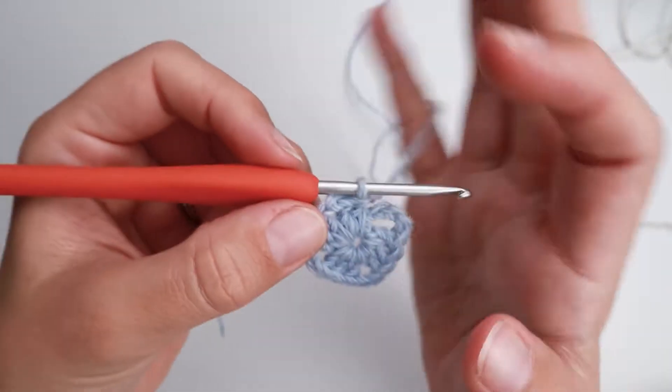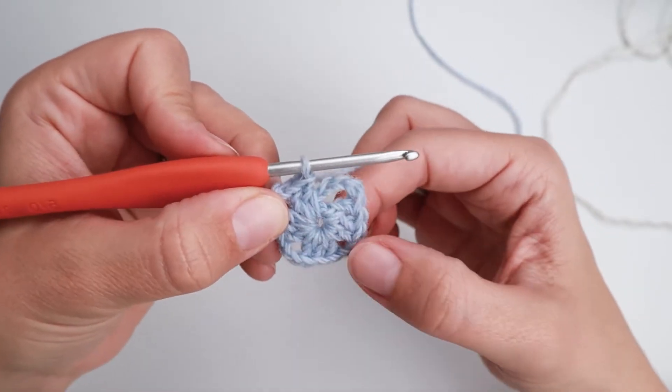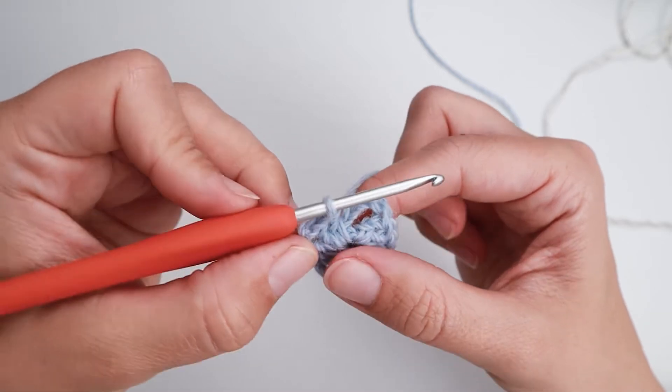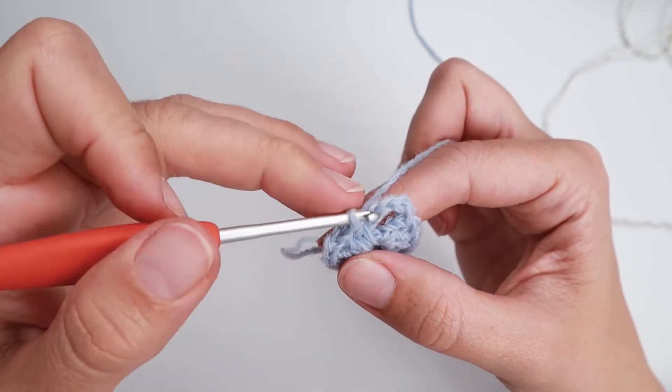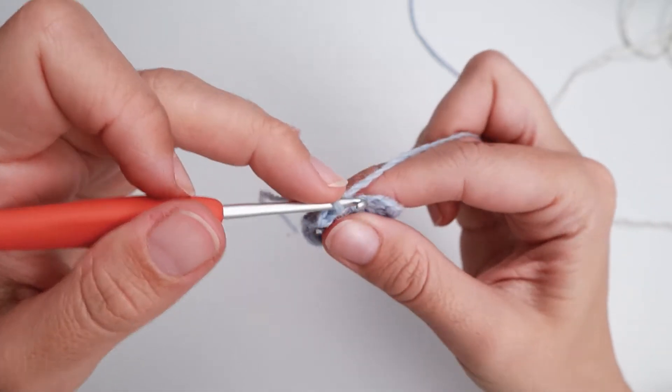So now I want to show you where to do your color change if you work your square in two colors. You do it when you make your last slip stitch in the third chain stitch here.